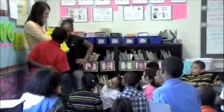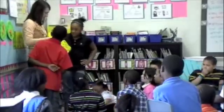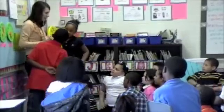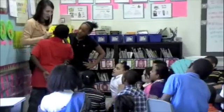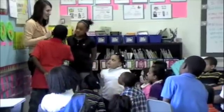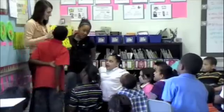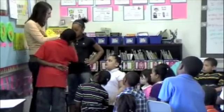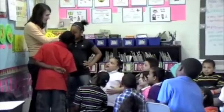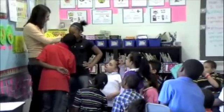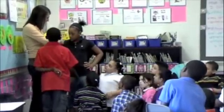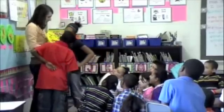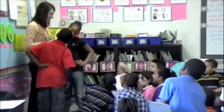Let's do a trickier one. First, find the hour — the hand is between 10 and 11, so the hour is 10. Then count by fives: 5, 10, 15. Should we go past 15? No, because the line stops there. Now we need to add 1, 2, 3 more lines. So 15, 16, 17, 18. What time is it? Ten-eighteen.